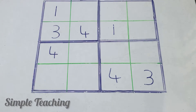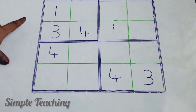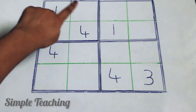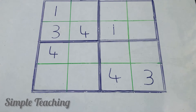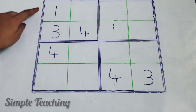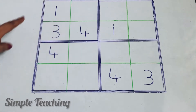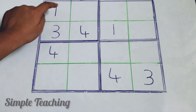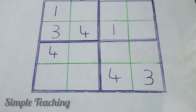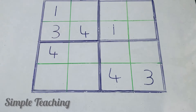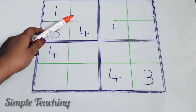The first logic I use to solve this: a row, a column, or a box will have 4 cells, and if most of the cells are already filled, then it will be easy to find the empty cell. Here, look at this box — we have 4 cells, and out of 4, three are already filled, so it is easy to find the 4th cell.